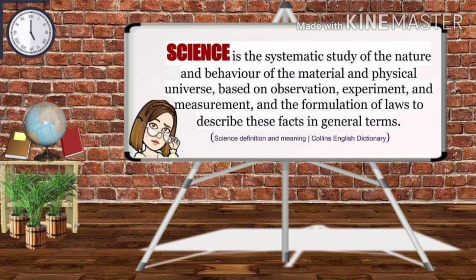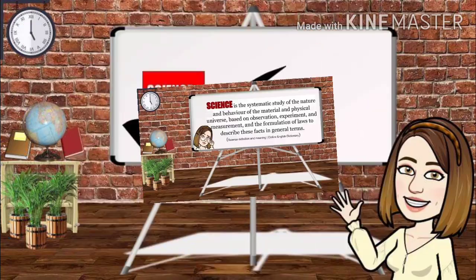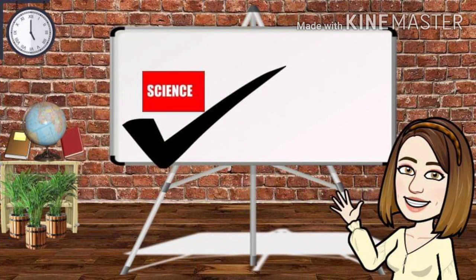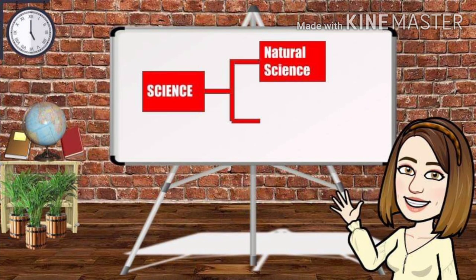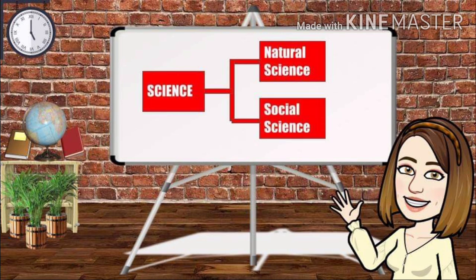Science is the systematic study of the nature and behavior of the material and physical universe based on observation, experiment, and measurement, and the formulation of laws to describe these facts in general terms. Science has two classifications: natural science and social science.